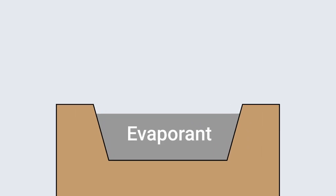The process begins by placing the substrate to be coated in a vacuum chamber along with a material known as the evaporant.